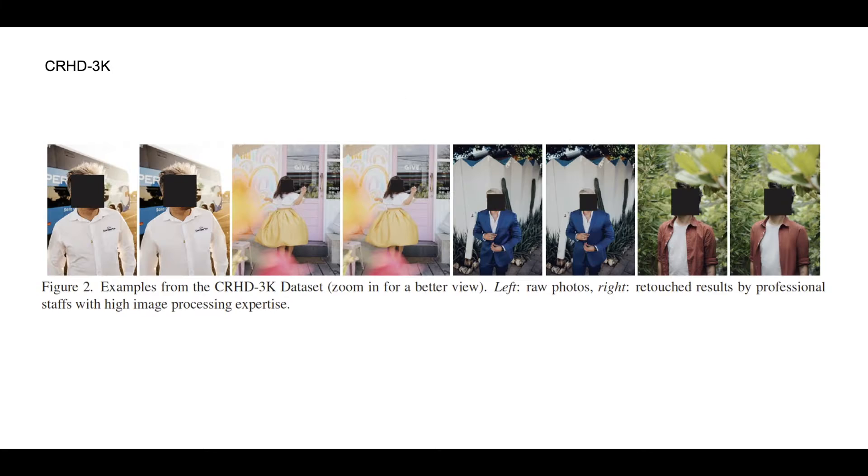Considering there are few publicly available datasets for the LPR task, we build and release the first high-definition cloth retouching dataset to facilitate the research. It consists of 3,022 high-definition raw portrait photos and the corresponding retouched photos, with the goal of removing the wrinkles, creases, and other blemishes on the clothes to make them look more smooth and beautiful.